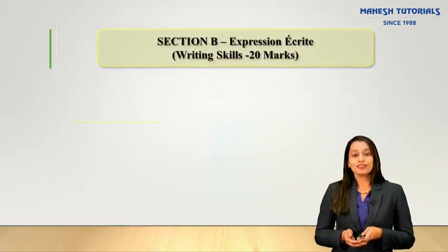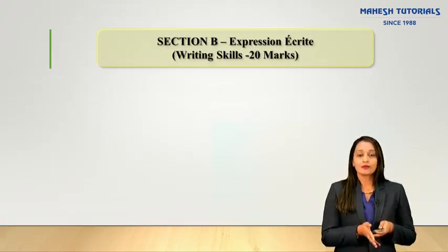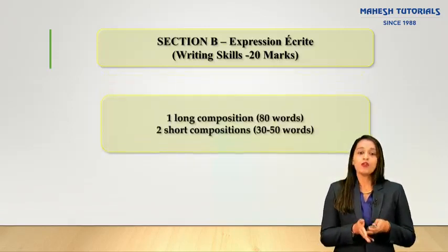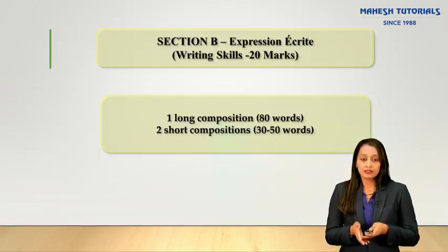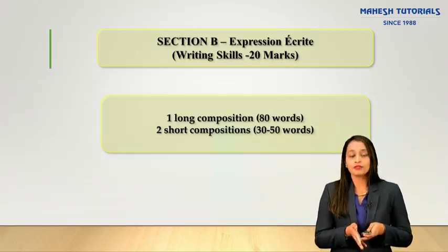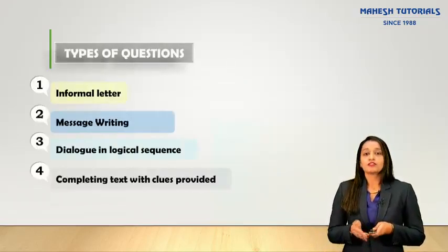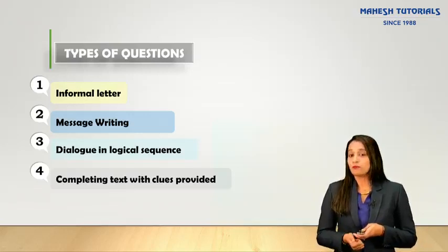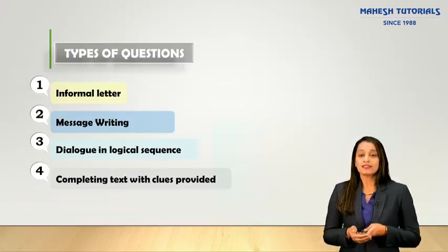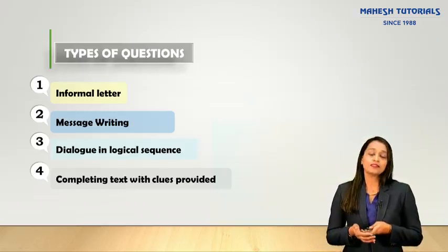Moving to the next section, Section B is Expression Écrite — your writing skill — allotted 20 marks. It includes one long composition which is a letter writing of 80 words, and two short compositions of 30 to 50 words. The types of questions asked are: informal letter writing (compulsory), message writing, putting dialogues in logical sequence, and completing the text with clues provided.